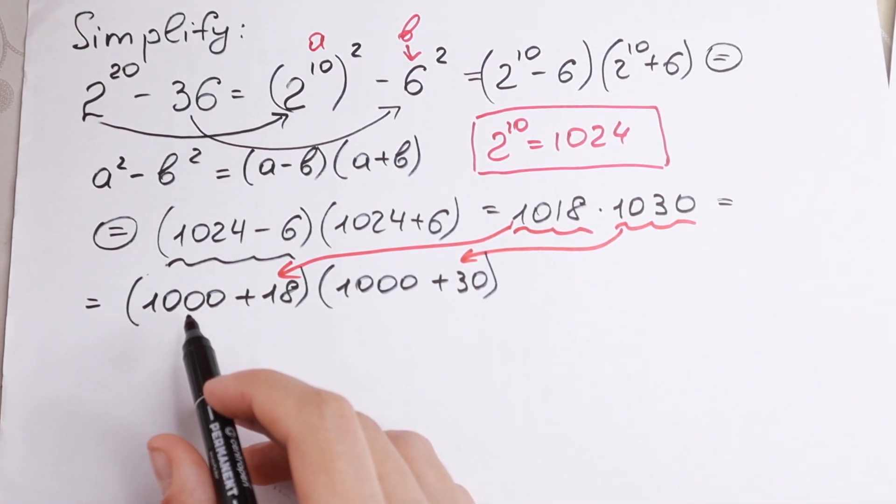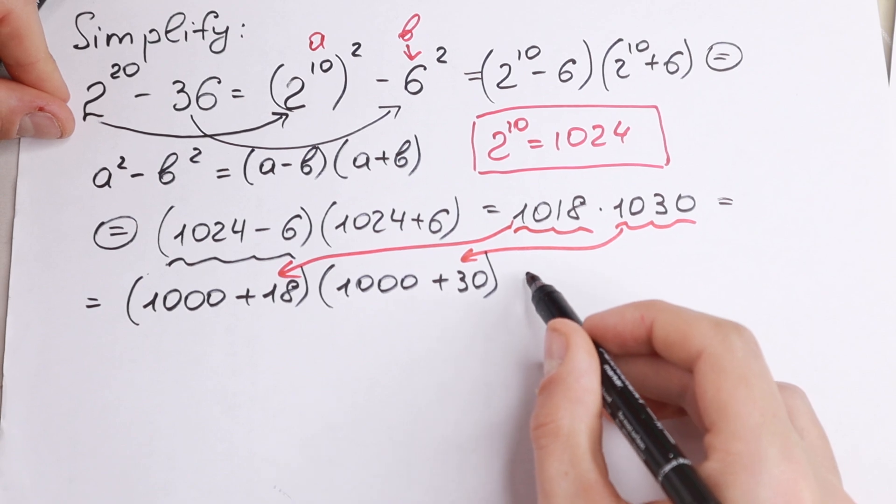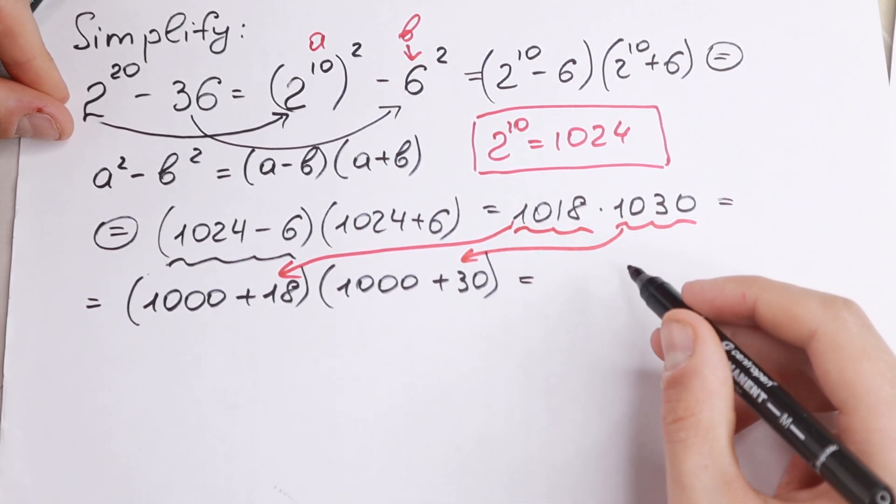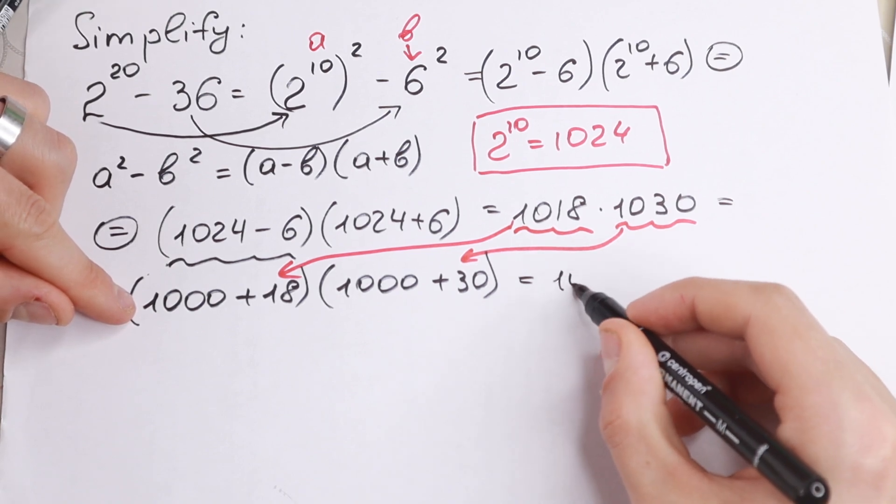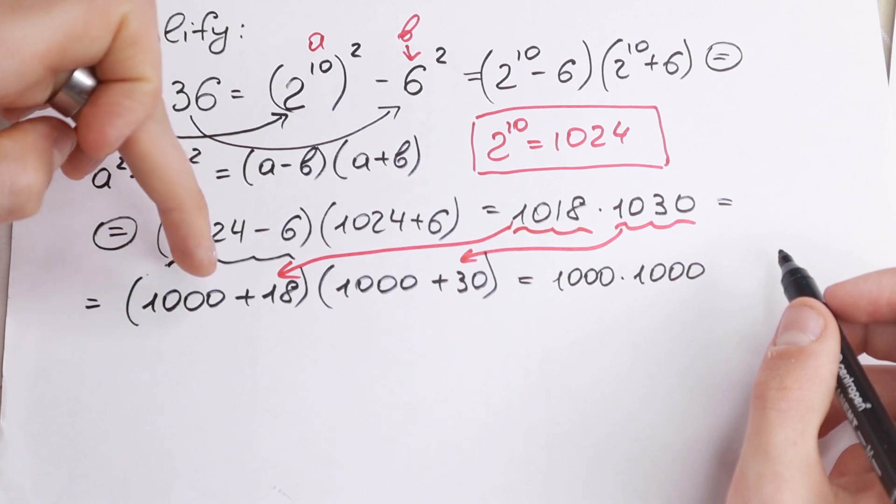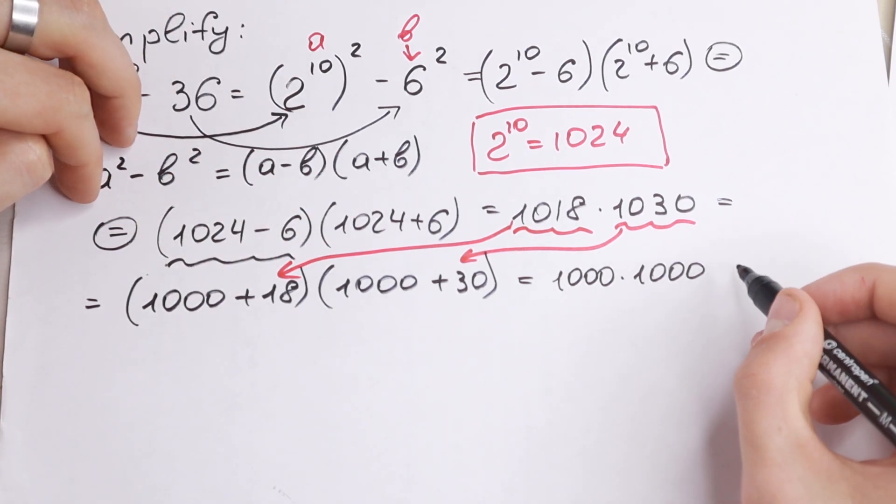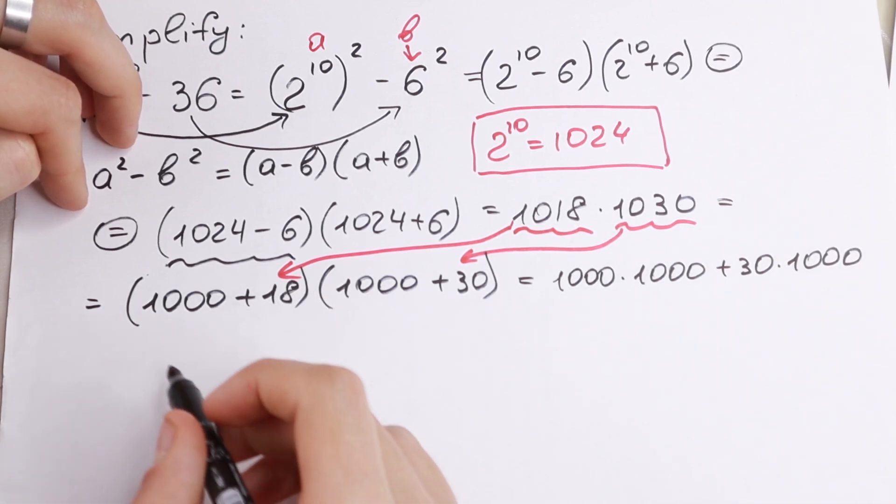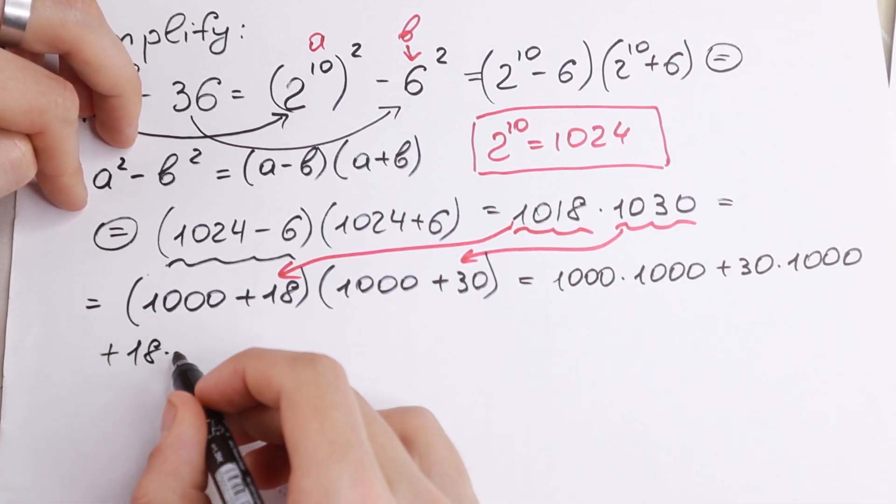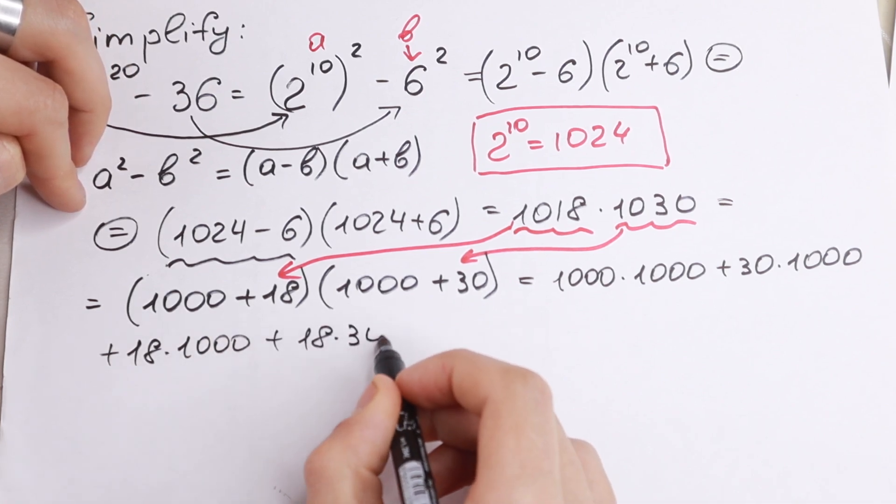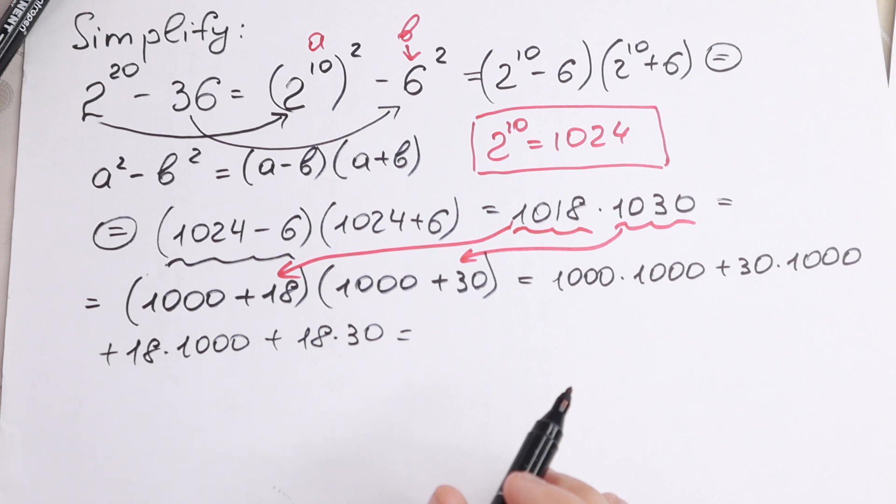And now take a look. It's really good to multiply these two parentheses, because we will have a really easy multiplication operation. We will have 1000 times 1000. This is the first. Right here we have plus 30,000 plus 30 times 1000. And plus 18 times 1000. And plus 18 times 30. So I just multiply parentheses by parentheses.